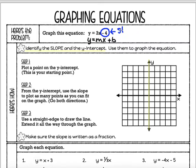I always write a little note that this is where we're going to start — the y-intercept. So on the y-axis, I'm going to put a point at negative 4: 1, 2, 3, 4. And there's my first point.